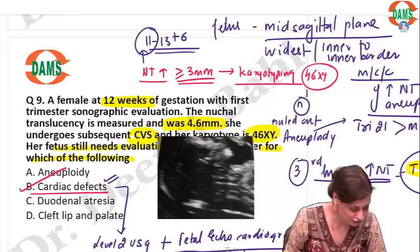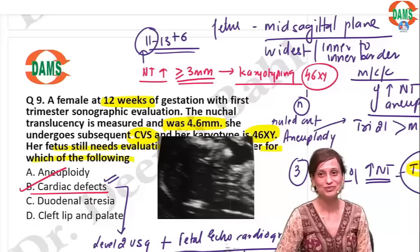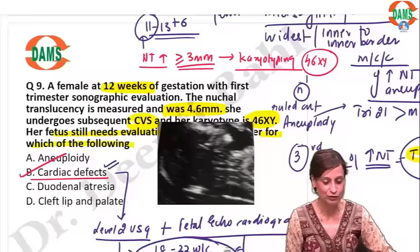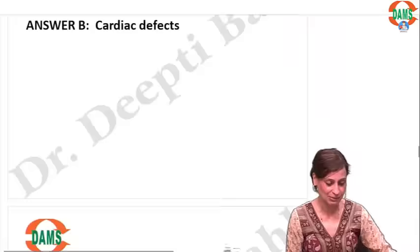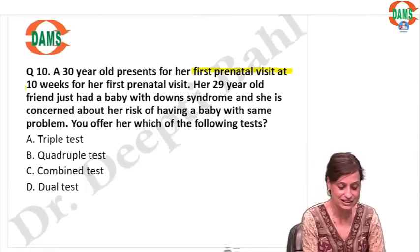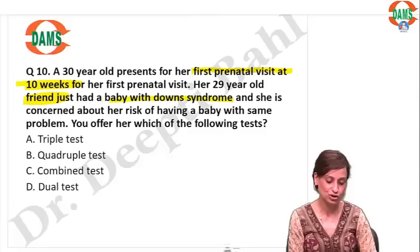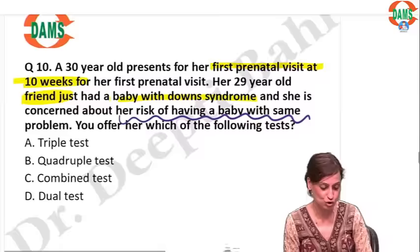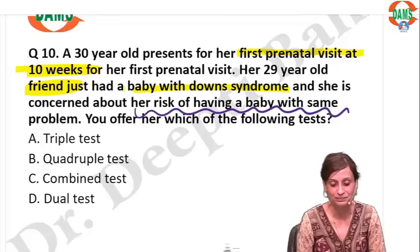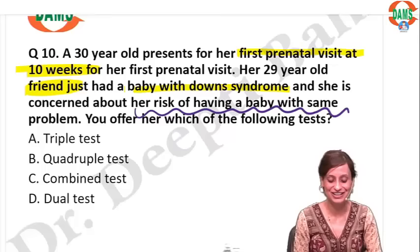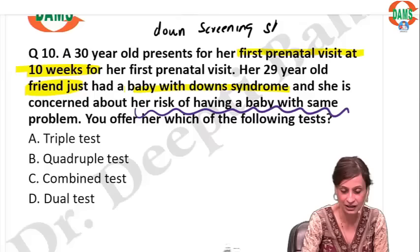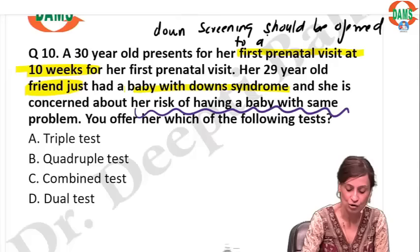Quickly mark your score for question number 9 and move on to question number 10. Your patient has come for her first prenatal visit at 10 weeks. Her friend had a fetus with Down syndrome. She is concerned about her own risk. Which test will you offer? Down screening should be offered to all pregnant women. Commit your answer.